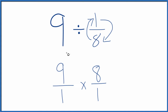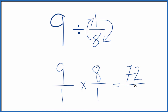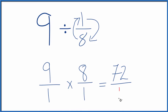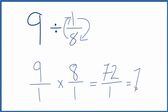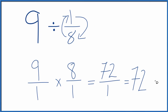Now we can just multiply these fractions. When you're multiplying fractions, you multiply the numerators, then the denominators. 9 times 8 is 72. 1 times 1 is 1. And 72 divided by 1 is just 72.